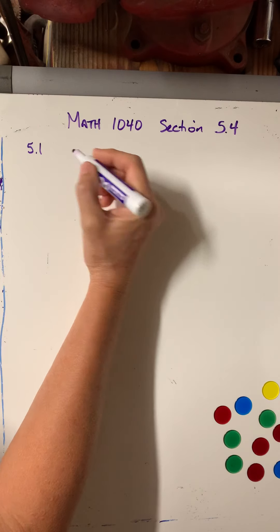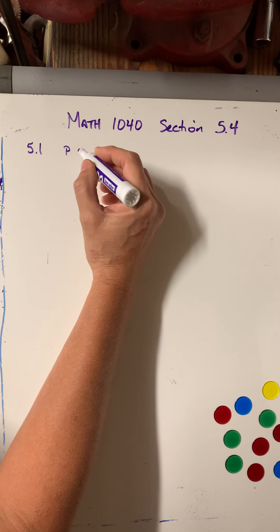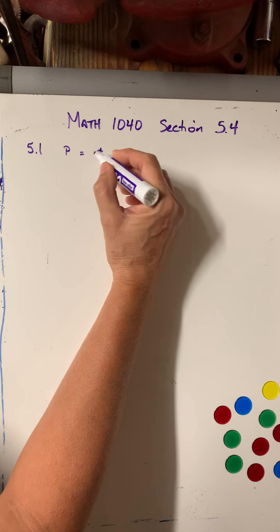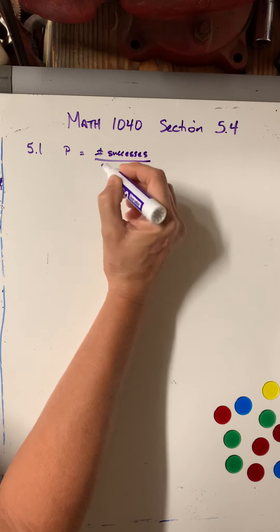In 5.1 we talked about basic probability, and what we learned is that the probability of something, in order to find probability, we would just do the number of successes divided by the number of outcomes.